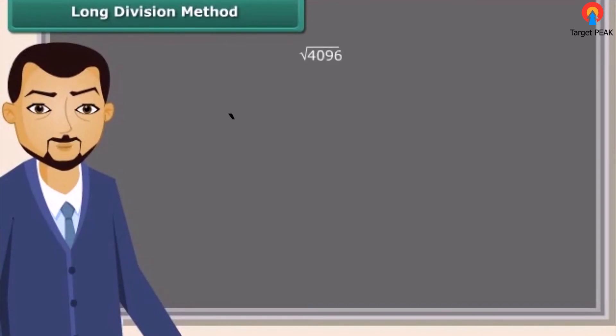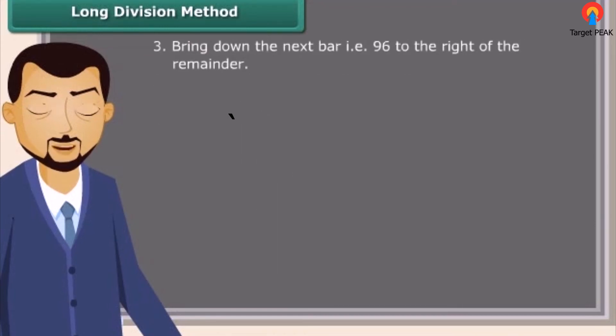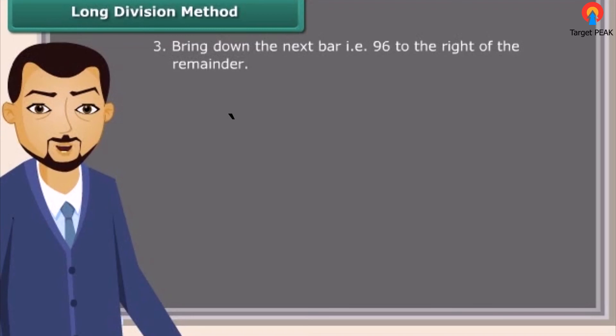For large numbers, the prime factorization method of finding square root becomes difficult. So, we use long division method. Let us look at the steps. First of all, draw lines over pairs of digits from right to left. Next, find the largest square number less than or equal to the first group that is 40. Since 36 is less than 40, we take 6 as the divisor and 6 as the quotient. Now, subtract 36 from 40. After that, bring down the next bar that is 96 to the right of the remainder.